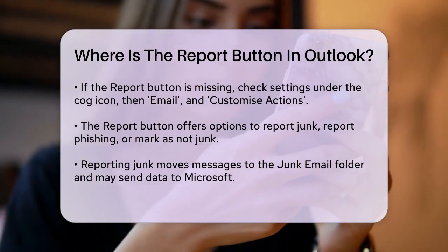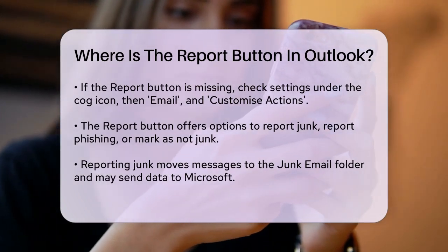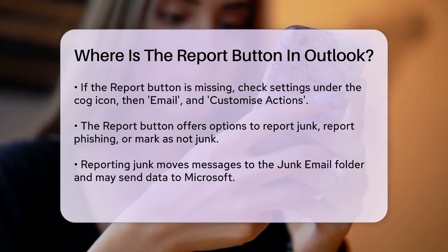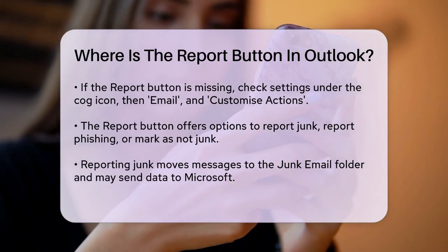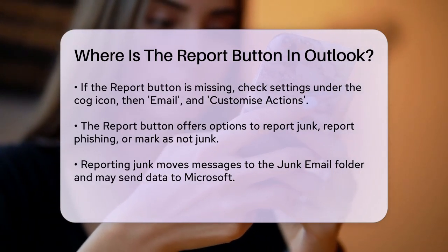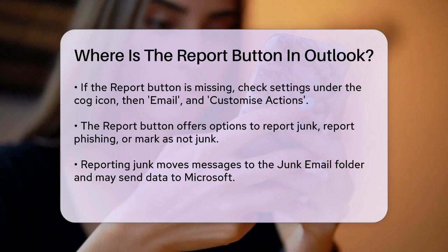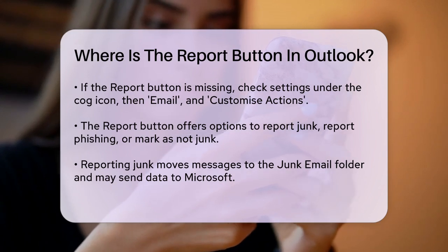If the button is missing, it could be due to an Outlook update resetting the settings. To fix this, go to the settings cog at the top of your Outlook, click on Email, then Customize Actions, and tick the Report Phishing button to surface it again.